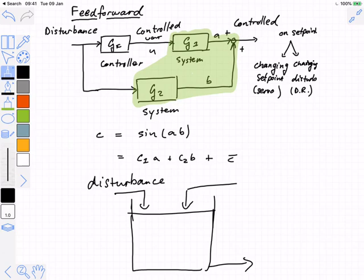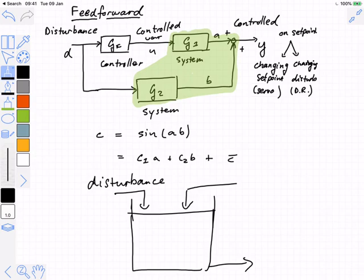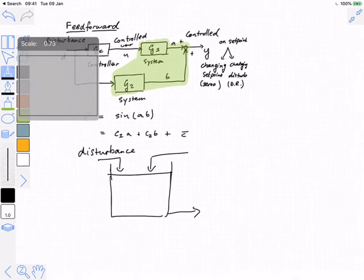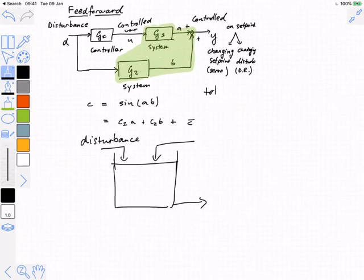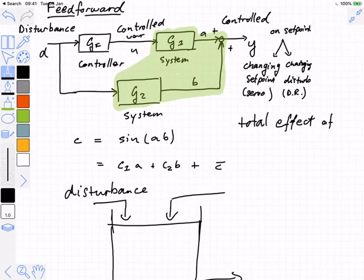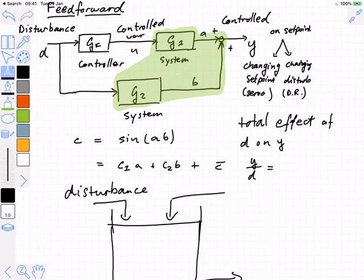In other words, if the disturbance changes, the feedforward controller takes action in such a way as to exactly counteract the effect of the disturbance. What we want is the transfer function connecting D and Y to be equal to zero. The total effect of D on Y, which we can write as Y over D, is much simpler than feedback control because we don't have any nasty loops. The effect is simply GC·G1 plus G2. That's it.